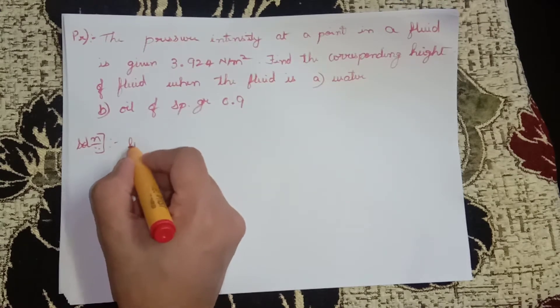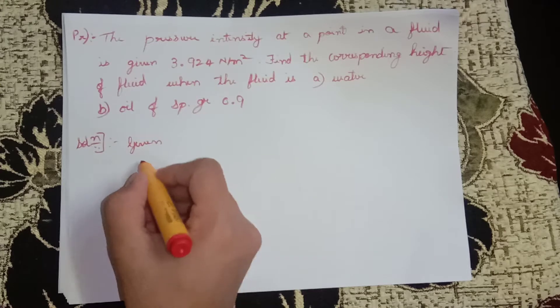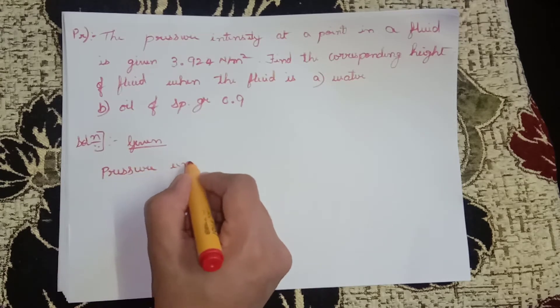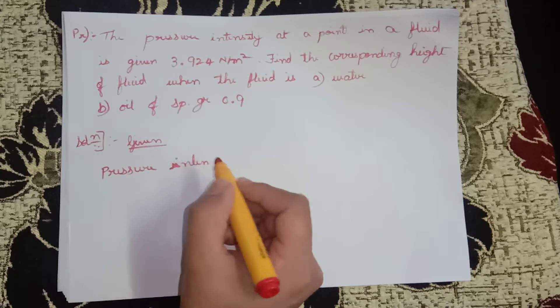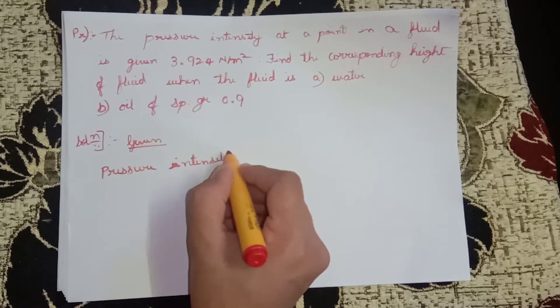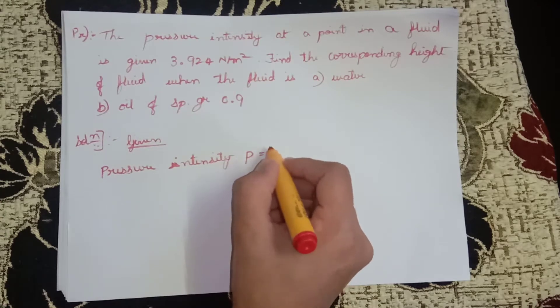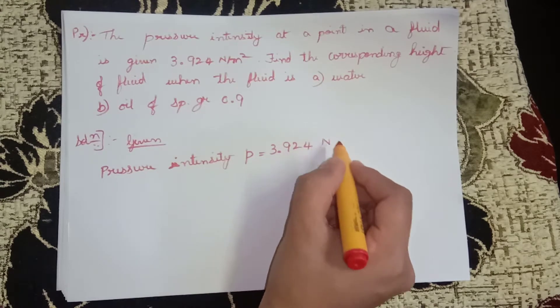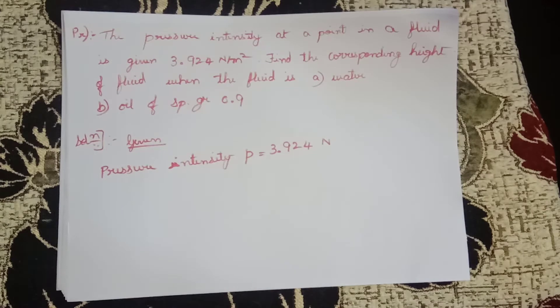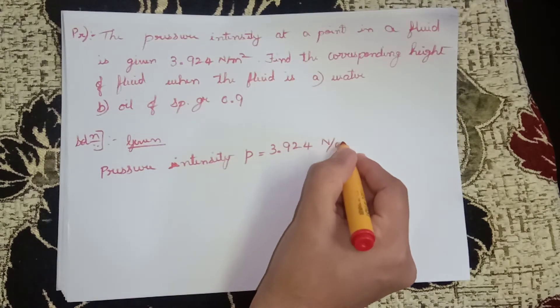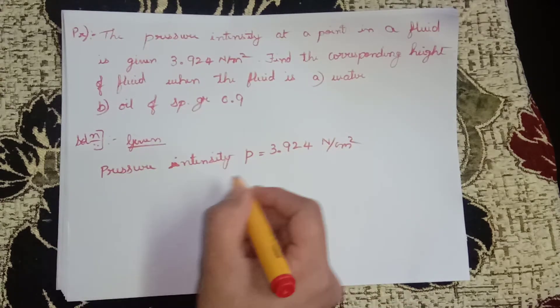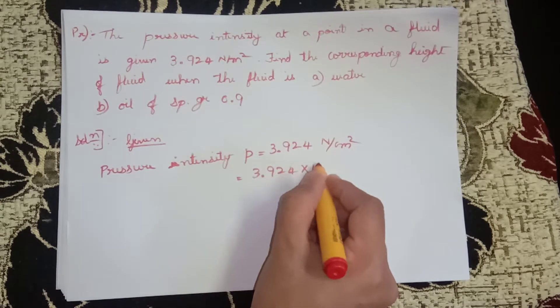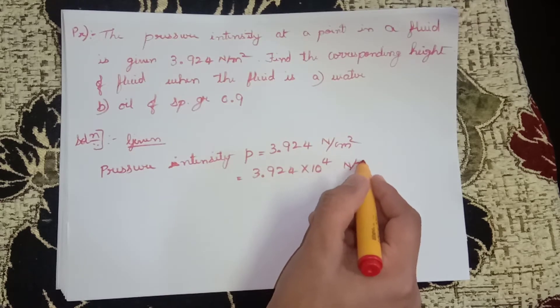Solution: Given is pressure intensity P equals 3.924 × 10⁴ newton per meter square.